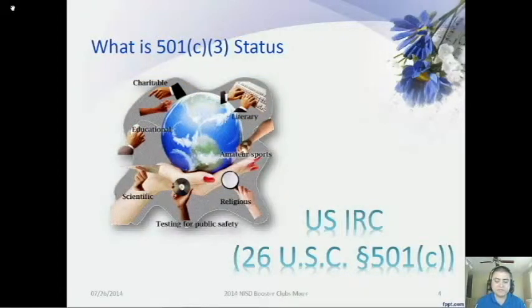A 501c3 nonprofit organization is exempt from federal income tax if its activities serve any of the following purposes: charitable, religious, educational, scientific, literary, testing for public safety, fostering amateur sports competition, or preventing cruelty to children or animals.